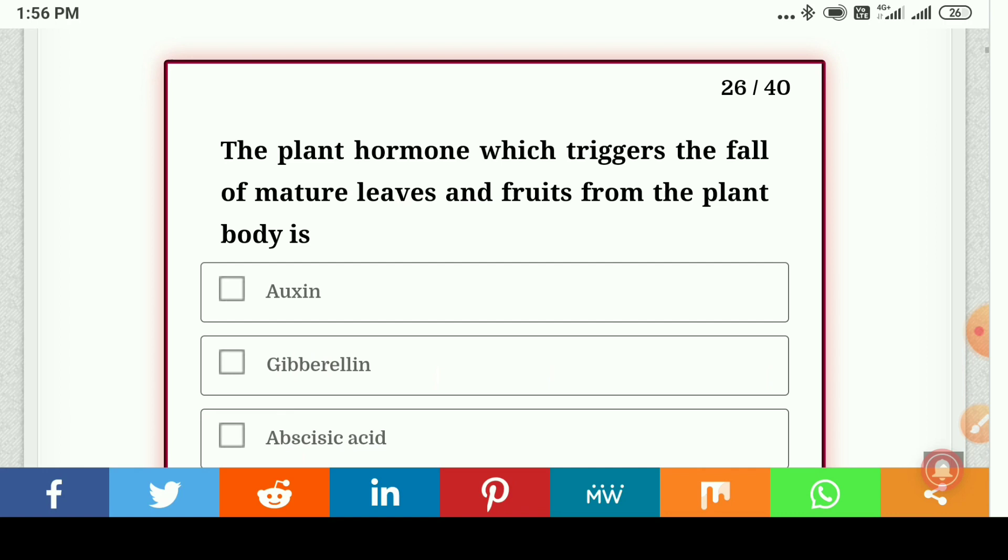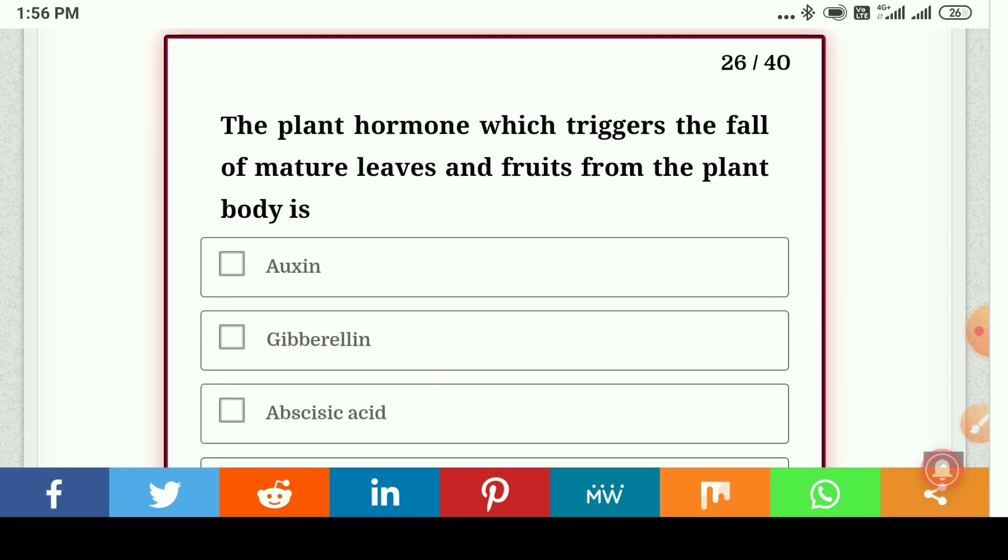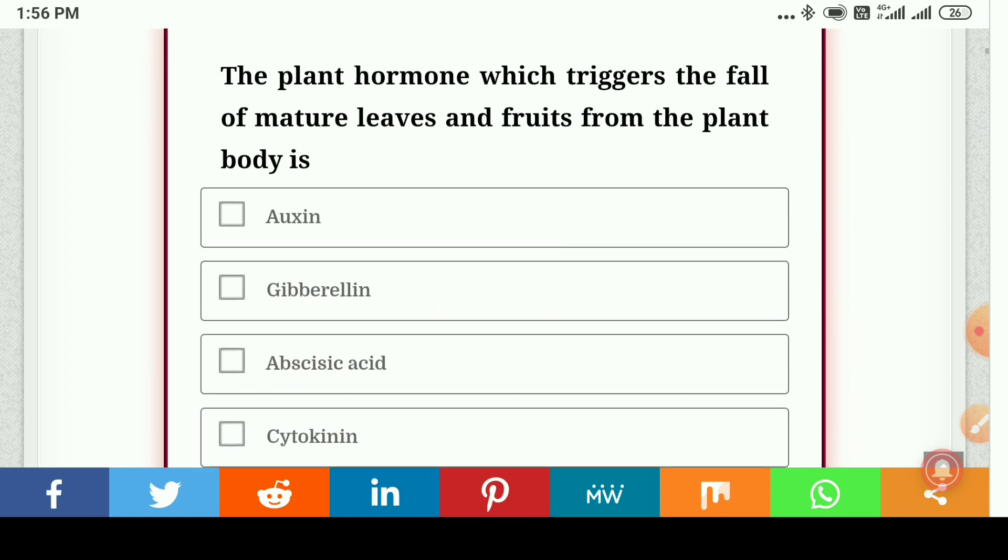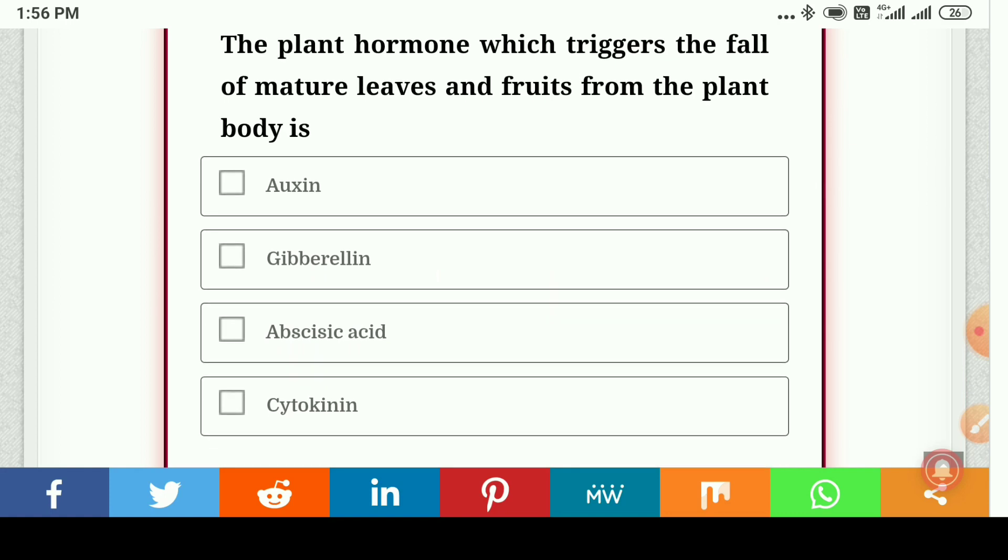The plant hormone which triggers the fall of mature leaves and fruits from the plant body is auxin, gibberellin, abscisic acid, or cytokinin. So answer is abscisic acid.